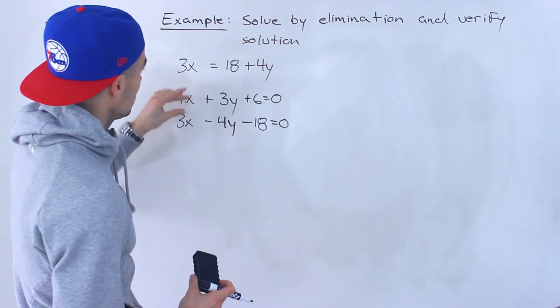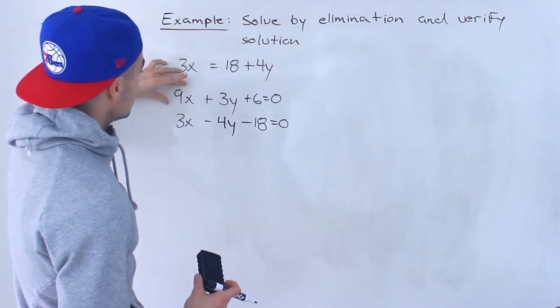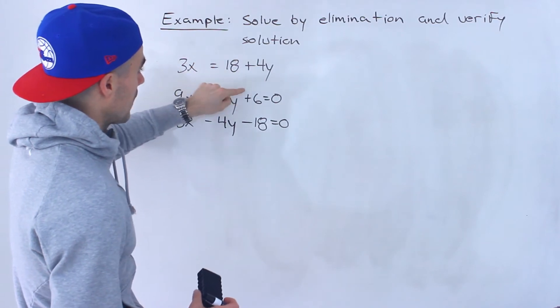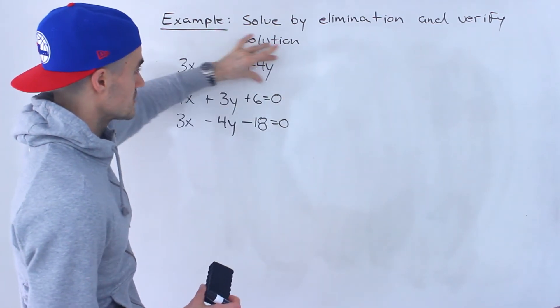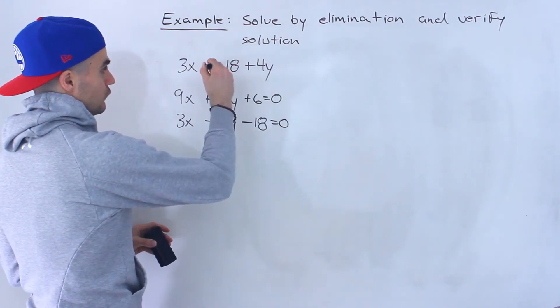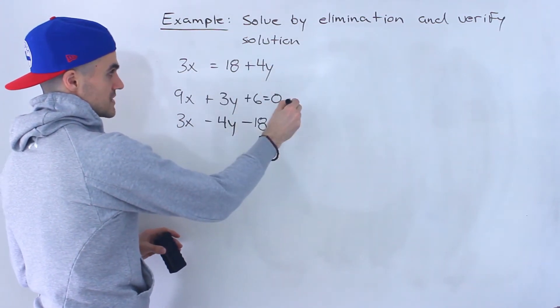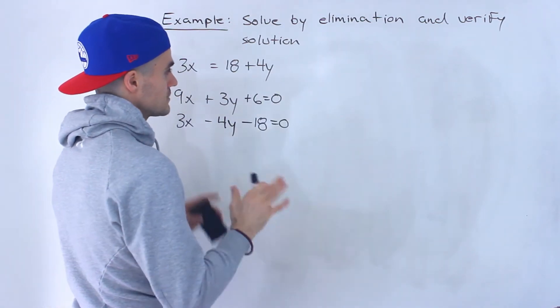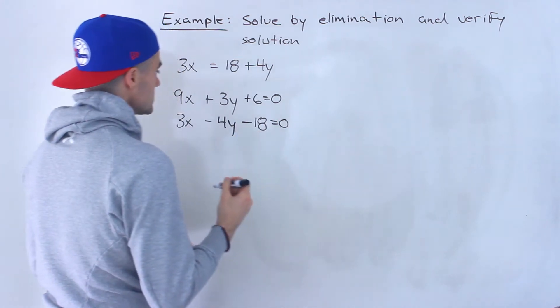You didn't have to do it like this necessarily. We could have also took this line and put it in this format, so kept the 9x here and then brought the 6 over, the 3y over. We could have also brought the negative 4y over and the positive 6 over, so all the constants are on the right side, all the variables on the left side. It doesn't really matter as long as it's the same format for both lines.